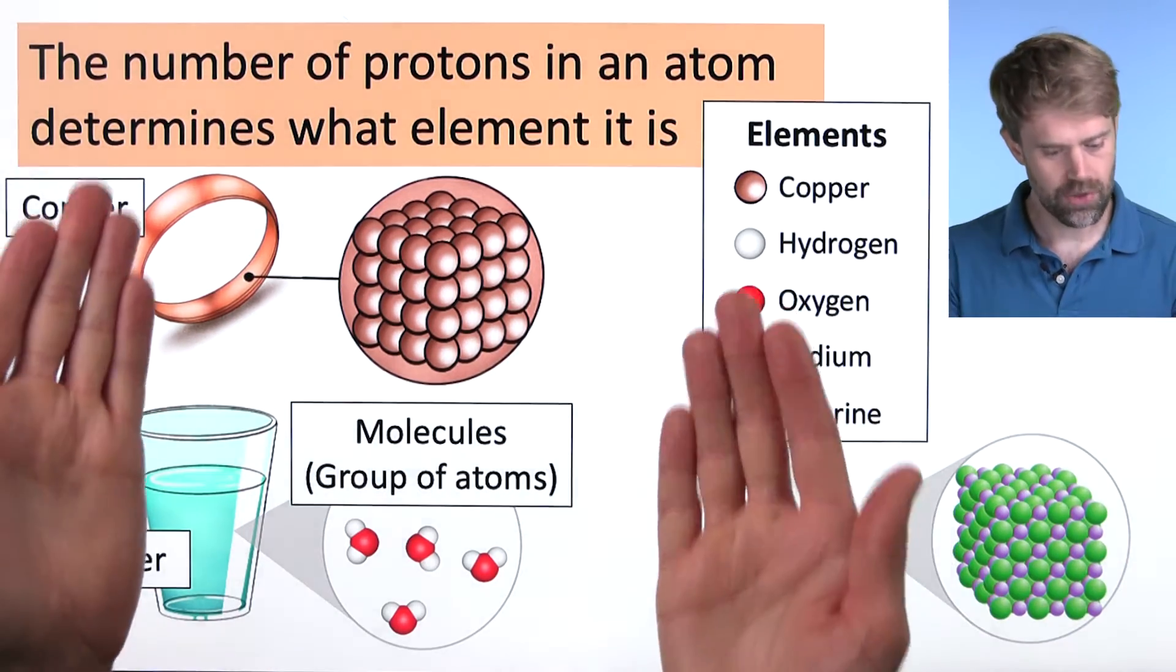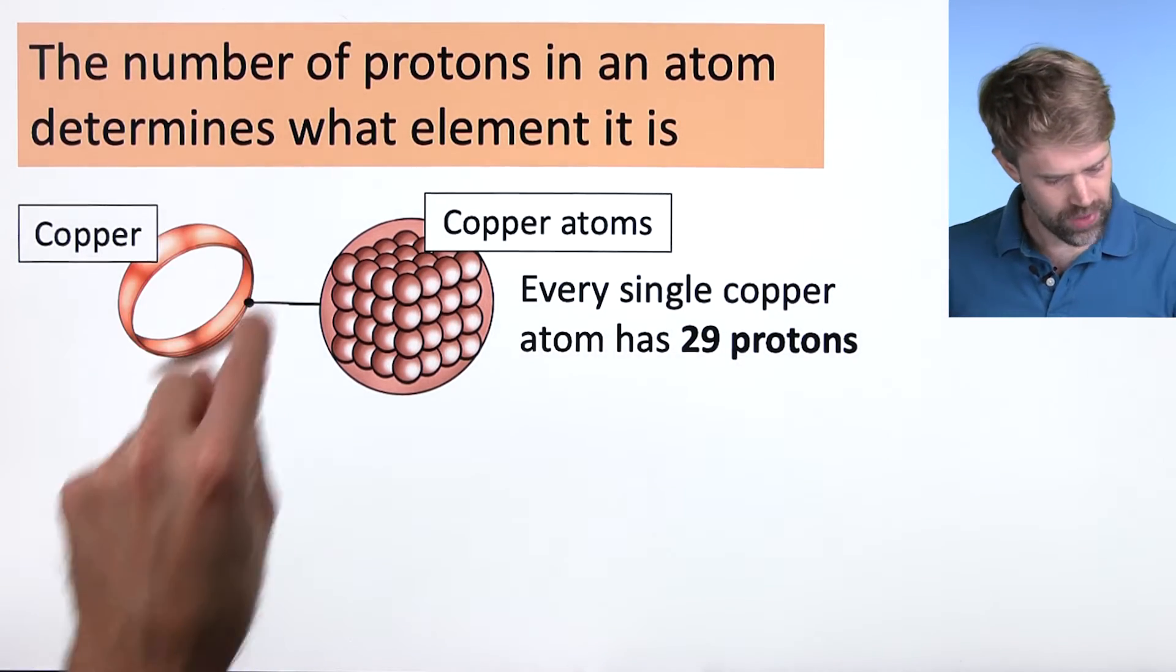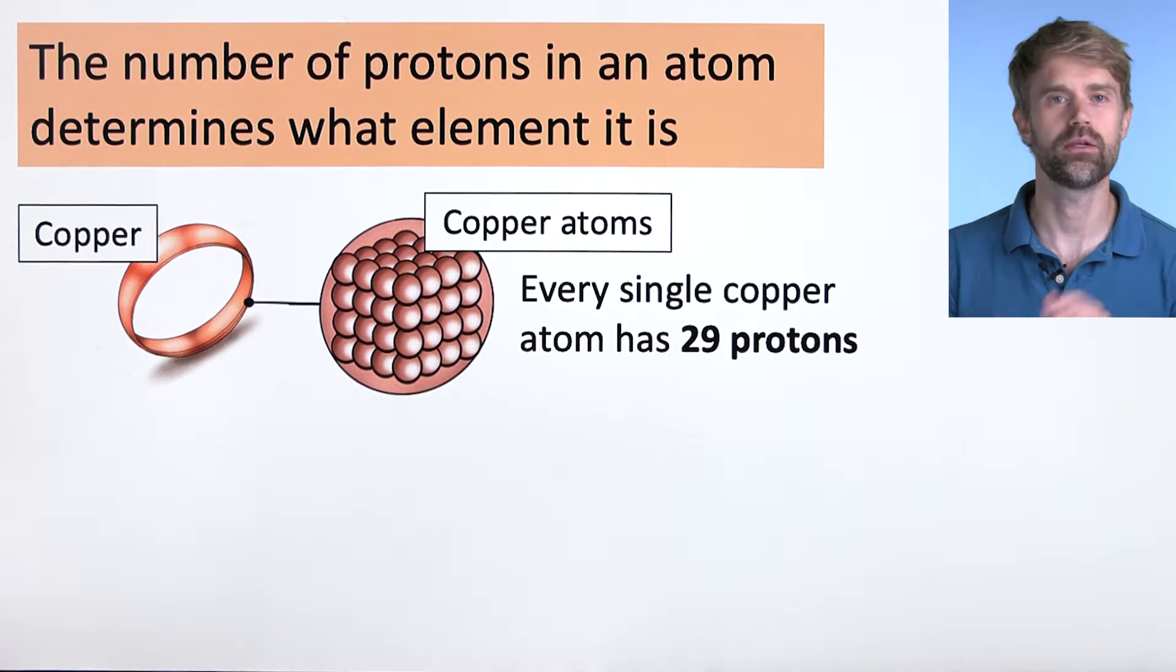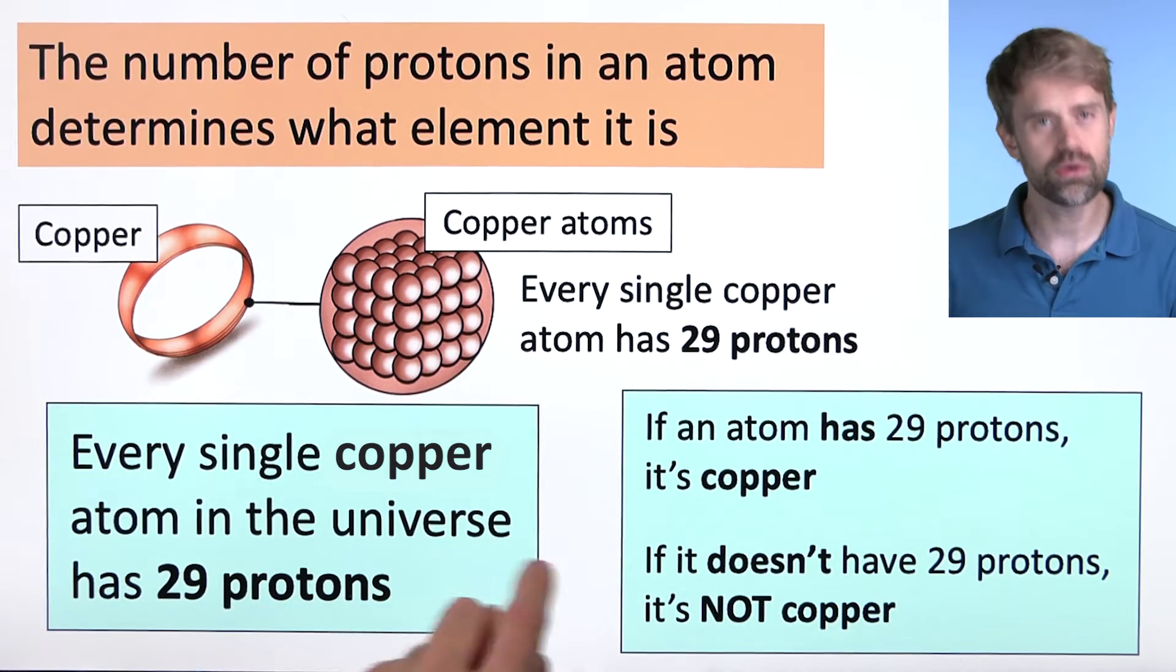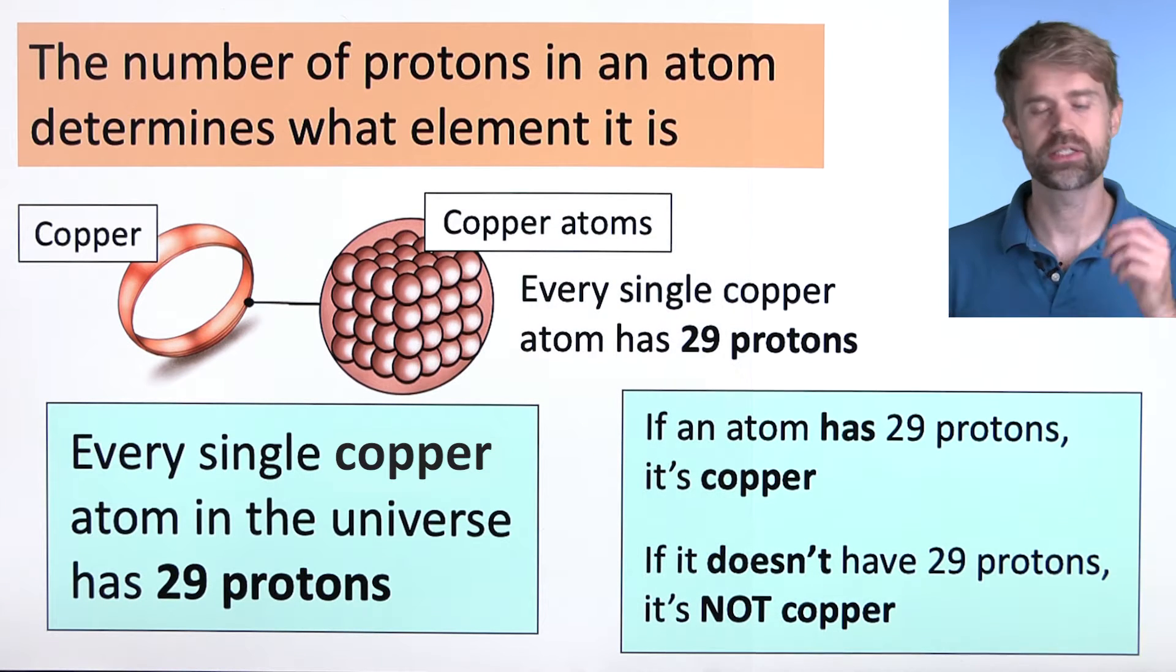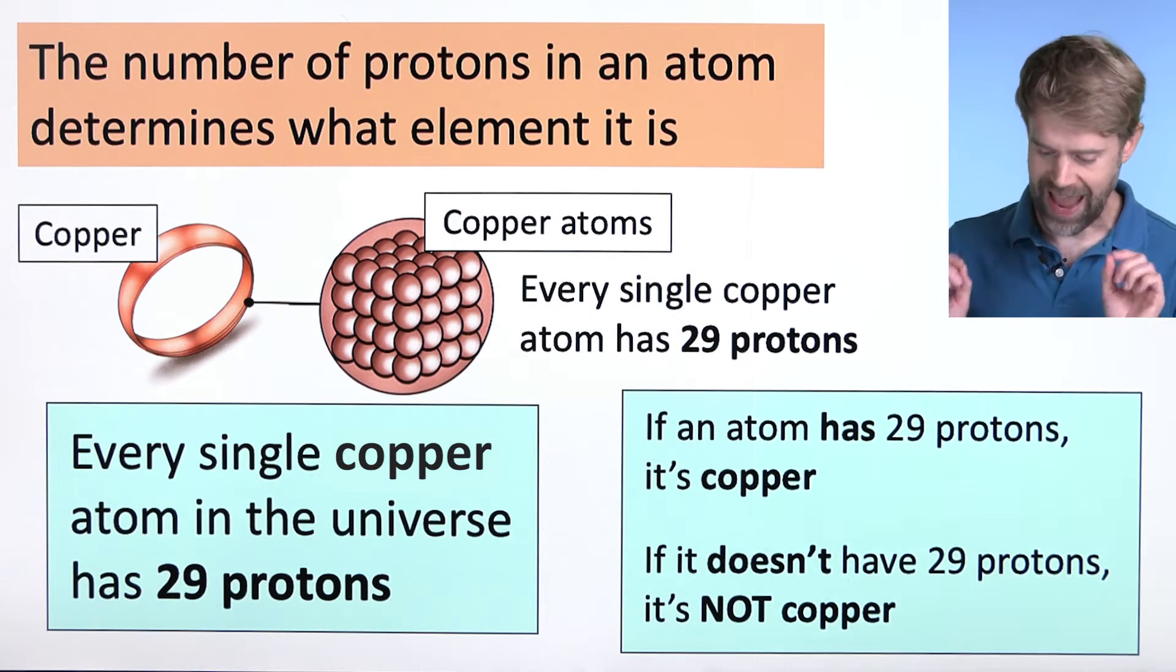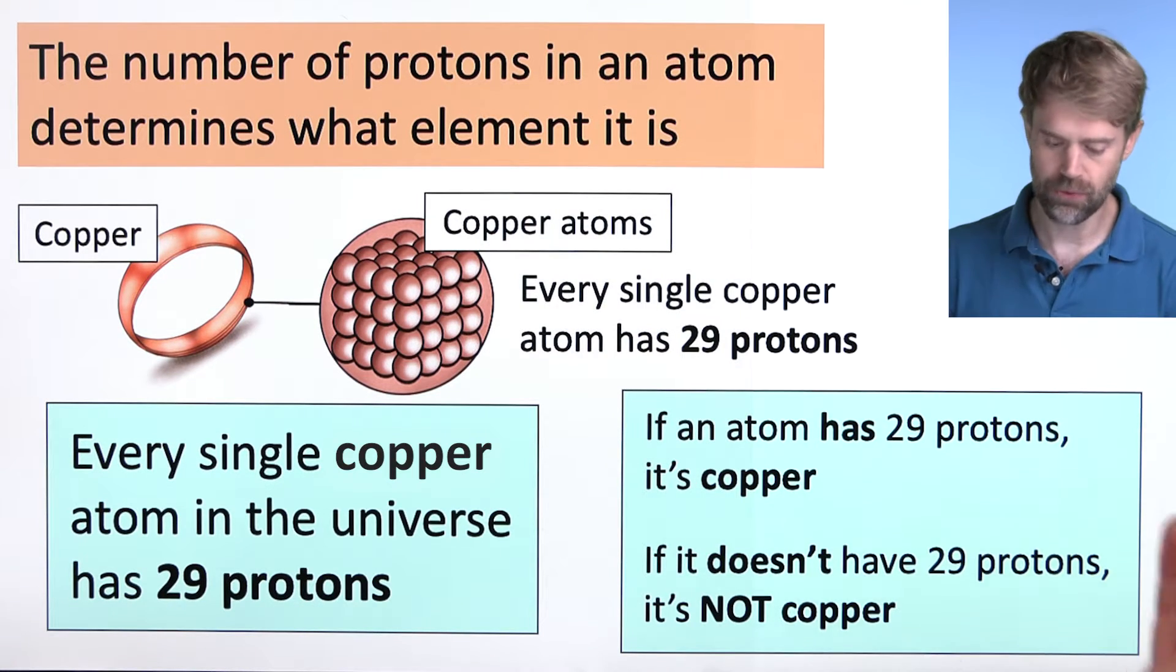Well, fundamentally, it's the number of protons in their nucleus. Here's that copper ring made of copper atoms. Every single one of these copper atoms has 29 protons in the nucleus. And in fact, every single copper atom in the universe has 29 protons in the nucleus. These two rules over here are simple but essential. If an atom has 29 protons, it's copper. And if an atom doesn't have 29 protons, it's not copper. Simple as that.